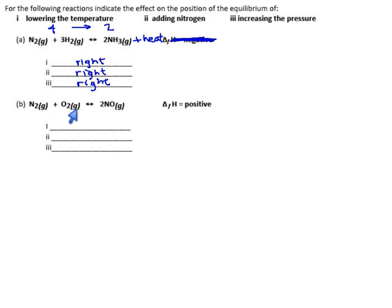Okay. For this one, now the delta H is positive, meaning it's endothermic, meaning now our heat's on the left. Now we have heat plus N2. I'll put it under here just because there's no room anywhere else.